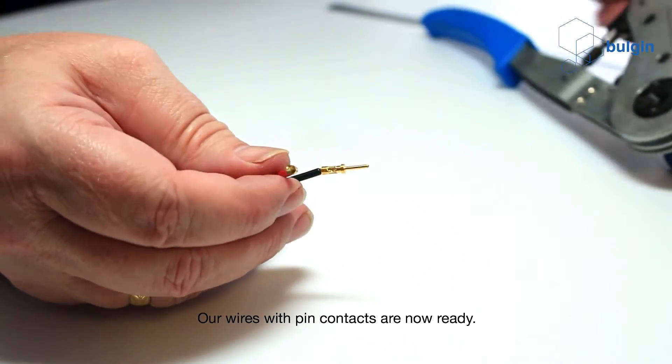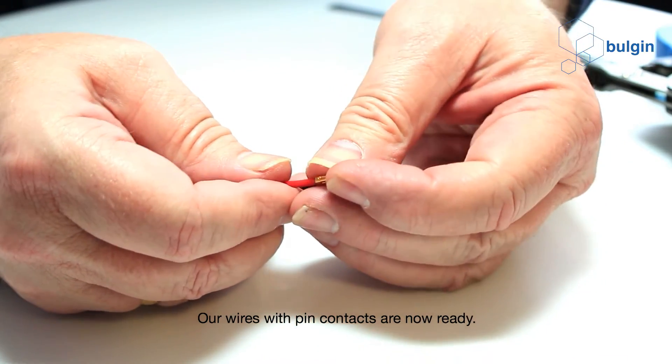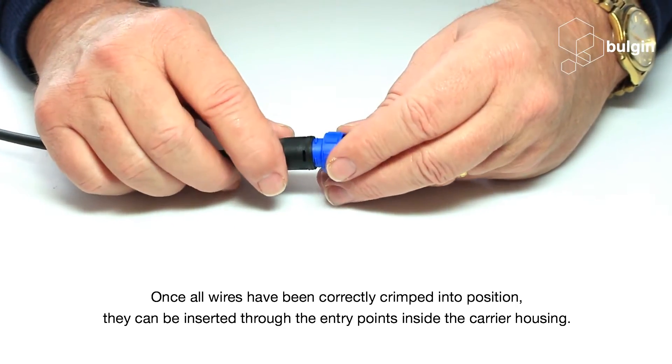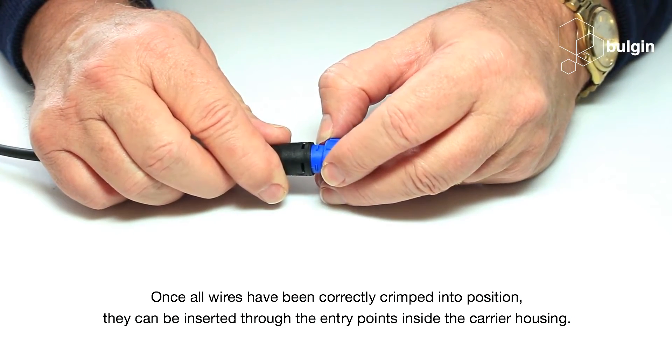Our wires with pin contacts are now ready. Once all wires have been correctly crimped into position, they can be inserted through the entry points inside the carrier housing.